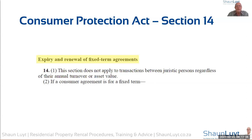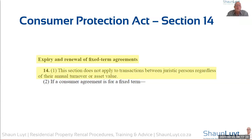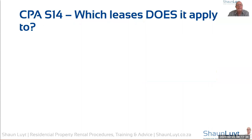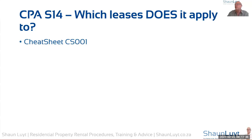Section 14 says it does not apply to transactions between juristic persons, regardless of annual turnover or asset value. This is where people start getting confused. So let's look at which leases Section 14 of the Consumer Protection Act applies to. To help with that, I have created a cheat sheet which I will send you afterwards at the end of this webinar.